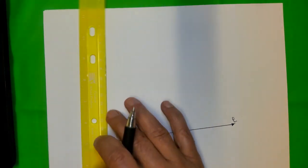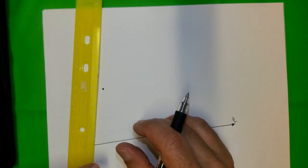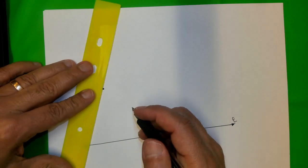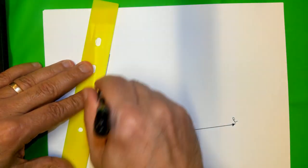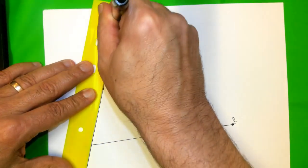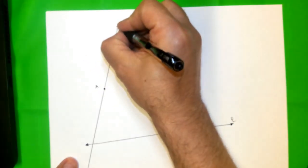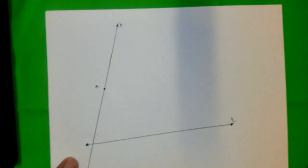And the first thing first, I'm going to draw another line, which I'm going to call it T. Okay, this is the transversal line, how we call it.